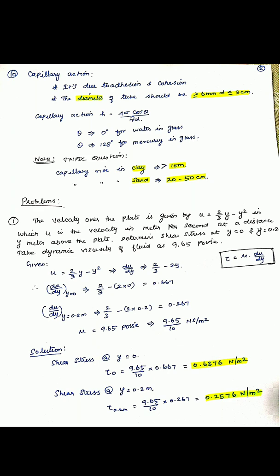Problem 1: The velocity over a plate is given by u equals (2/3)y minus y squared, where u is velocity in meters per second at distance y meters above the plate. Determine the shear stress at y equals 0 and y equals 0.2 meter. Take dynamic viscosity as 9.65 Poise.